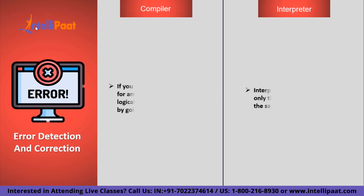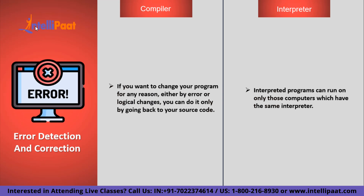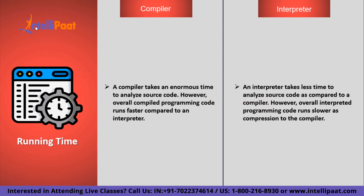The next factor is error detection and correction. If you want to change your program in the case of compilation, whether due to error or logical changes, you can only do so by going back to your source code. Whereas with interpreters, as the source code is interpreted line by line, error detection and correction becomes much easier — you can take a pause and change the instruction without waiting for execution to finish. Additionally, the compiler stores the machine code of the program on disk after translating, but the interpreter does not. It processes the program line by line, does not store machine level code on disk, and directly executes the instruction.